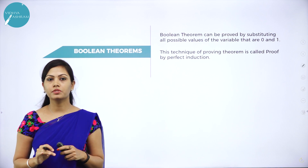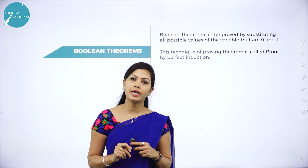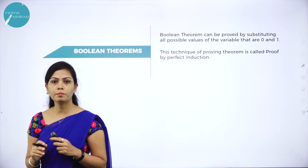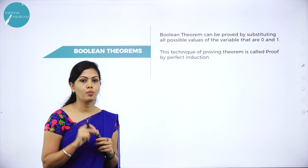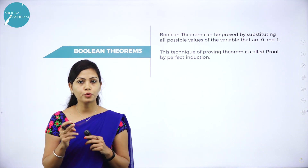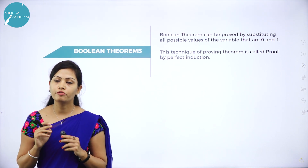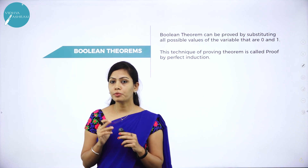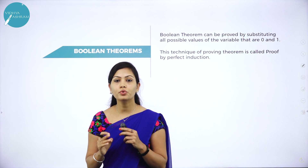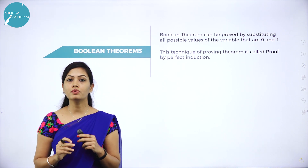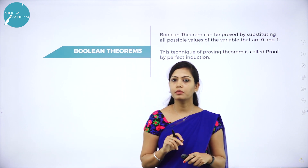Next we have Boolean theorems. Boolean theorems may be used to construct Boolean algebra expressions. Boolean theorems can be proved by substituting all possible values of the variables, that are 0 and 1. This technique of proving theorems is called proof by perfect induction. Boolean theorems can be proved using the truth table also.